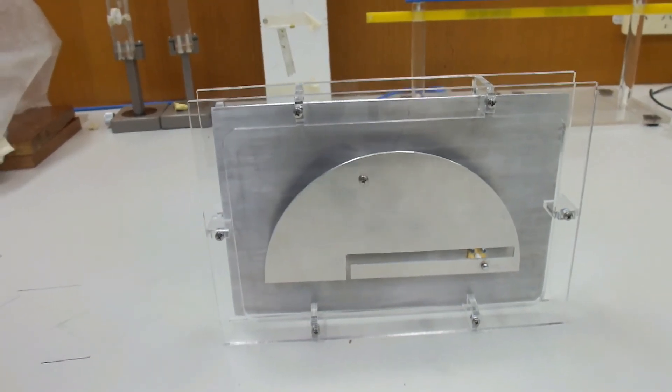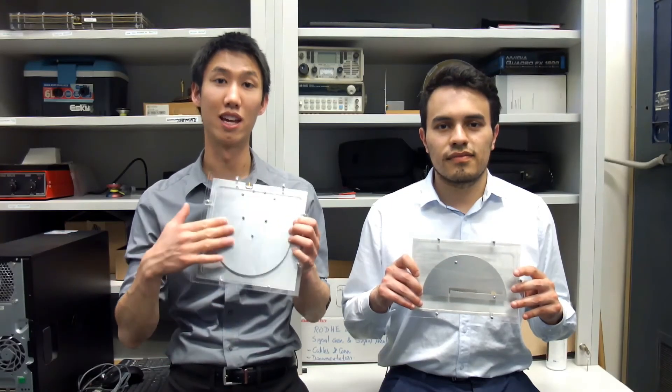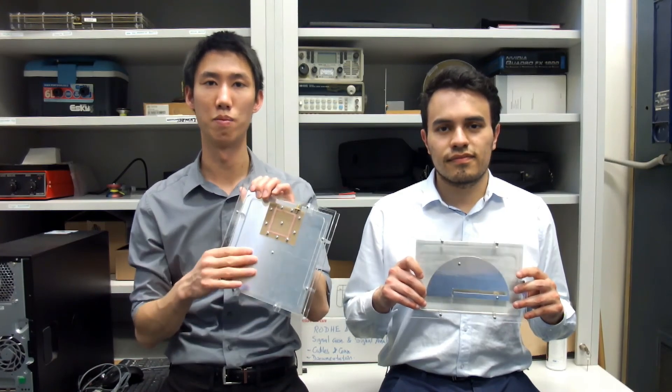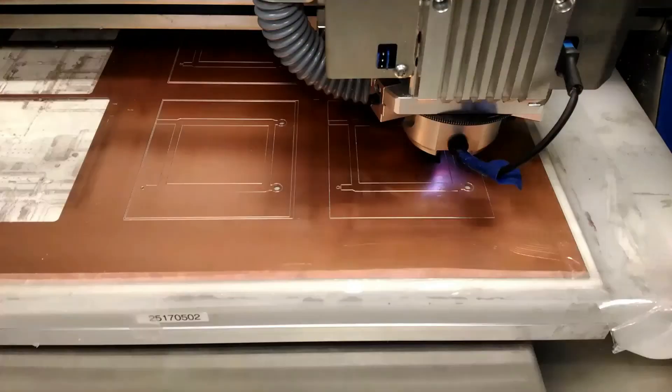For both linear and circular antennas, fabrication was done here on campus at Monash University. Both the antenna patch and the ground plane were made using 1 mm thick aluminum. The coupler was made using FR4.